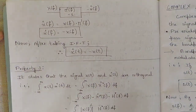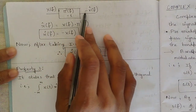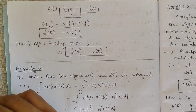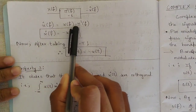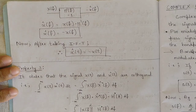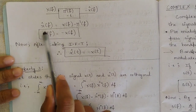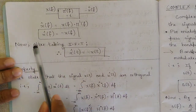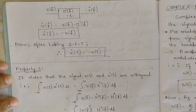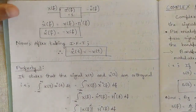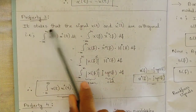Since H'(f) = −1, we have X̂(f) = X(f) · H'(f) = −X(f). Taking the inverse Fourier transform gives x̂(t) = −x(t), which proves property 2: the Hilbert transform of the Hilbert transform of x(t) equals −x(t).